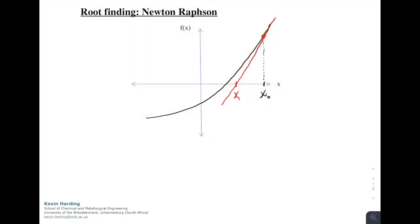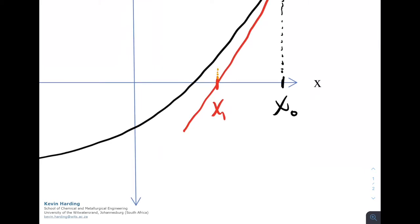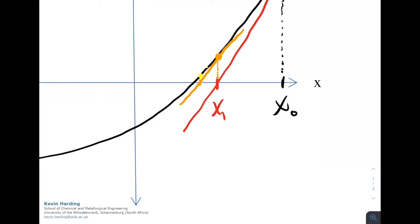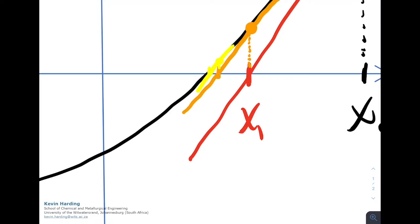We then again iterate and check, is that new x1 value close to the real y is equal to zero value? And if it's not, like we can see here, we again calculate the tangent line, and from that tangent line, we find the intercept where y is equal to zero for that tangent line, and repeat this until we get closer and closer to the actual intercept. And at some point we will match that intercept.